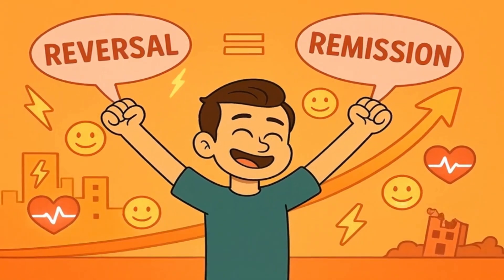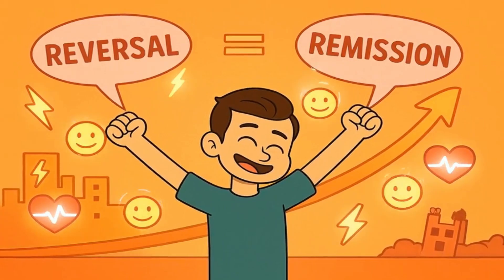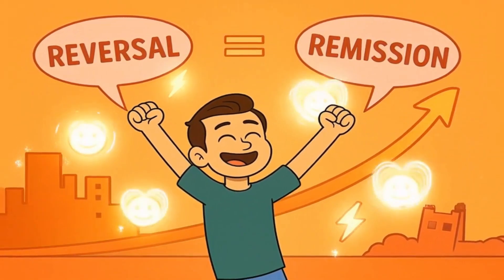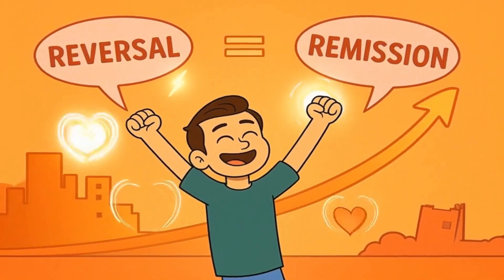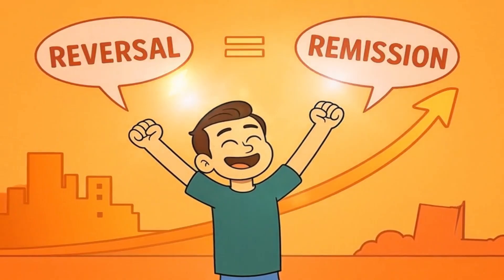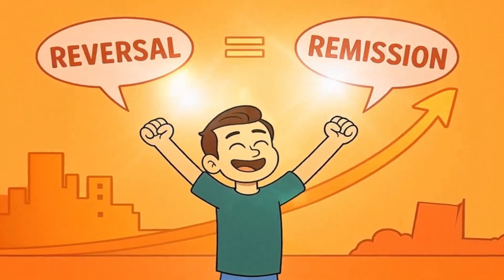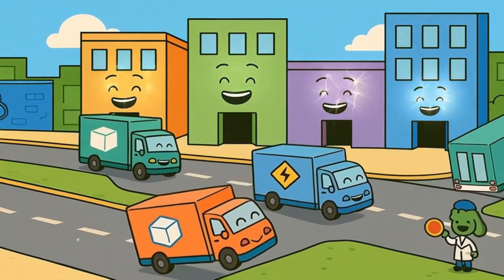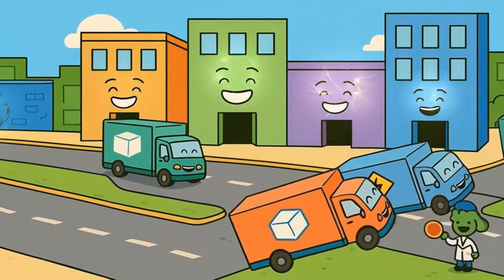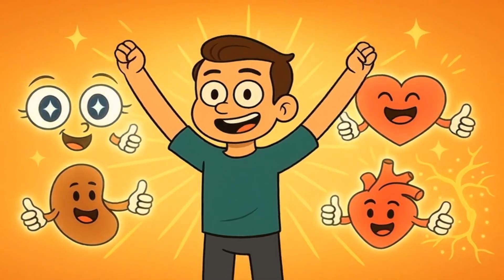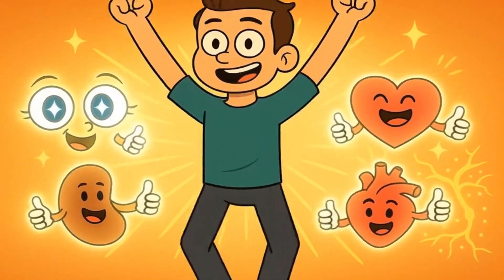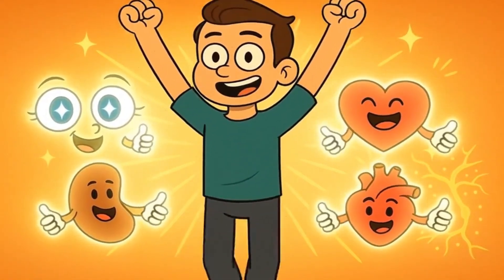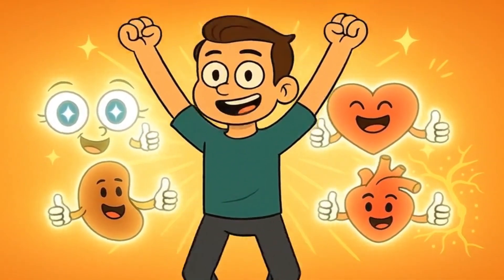The good news is that whether we call it reversal or remission, getting your A1C into a healthy range makes a huge difference in how you feel and your long-term health. When those sugar delivery trucks aren't piling up in the streets of your body city, everything works better — your energy levels improve, you feel better, and you're much less likely to have problems with your eyes, kidneys, nerves, and heart.